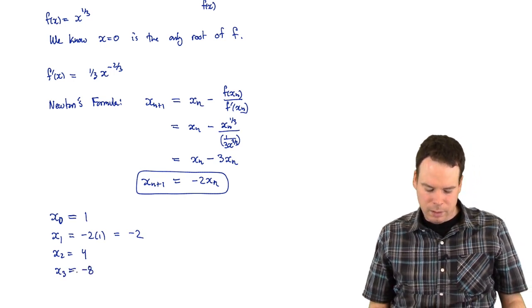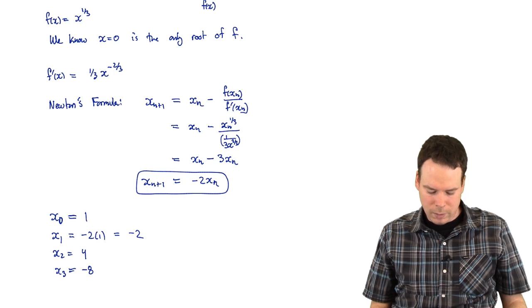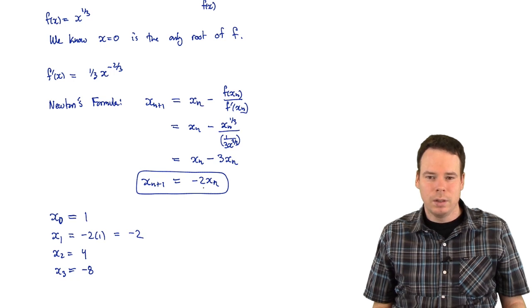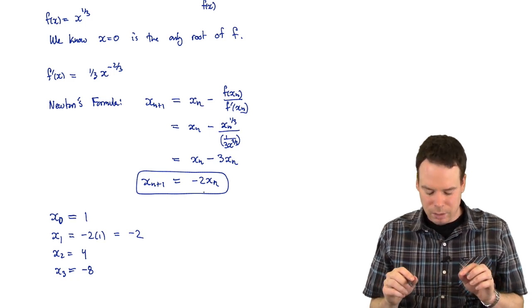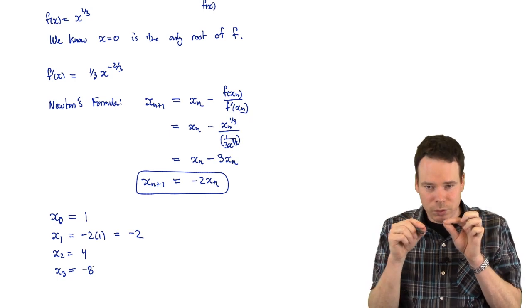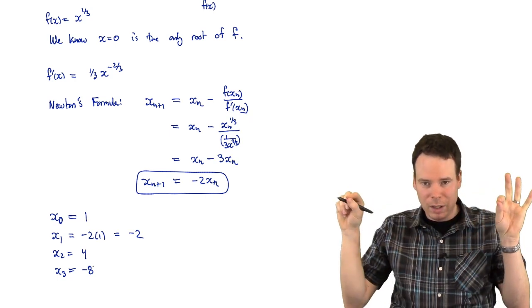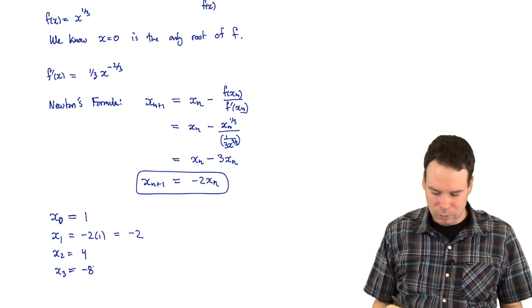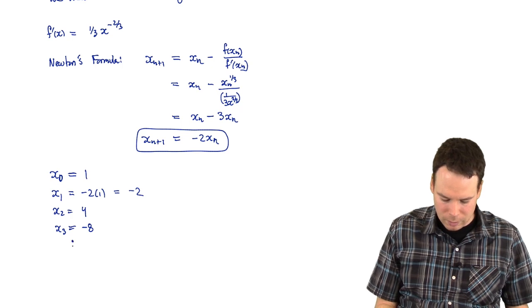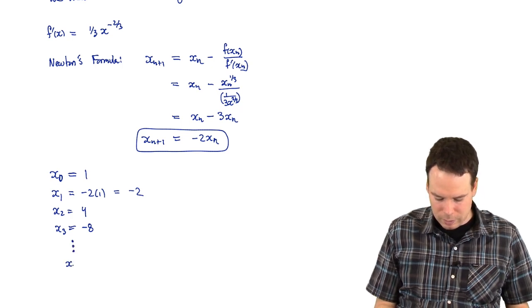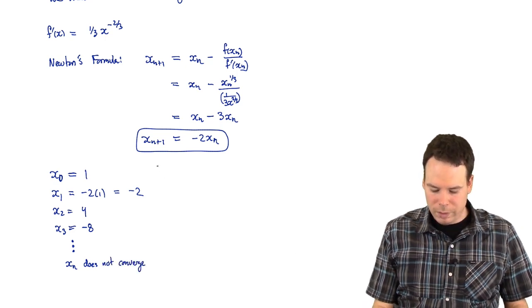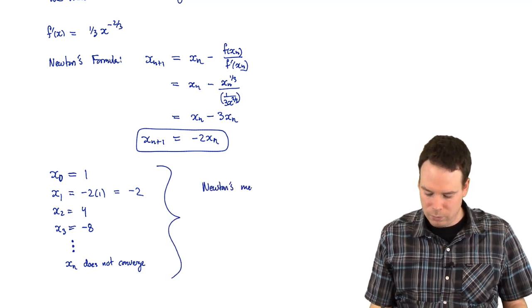And we see that every time we take the approximation, plug it back into our iterative formula, we just end up multiplying it by negative two. So what's happening is our sequence of numbers is not getting closer and closer to zero. Our sequence of numbers is actually getting bigger and bigger and bigger, bouncing back and forth on opposite sides of zero on the real line and heading off to infinity. So if we continue this, we see that xn does not converge. So what does that mean? It means Newton's method failed in this case.